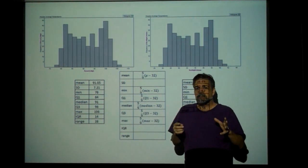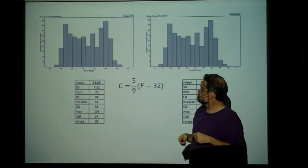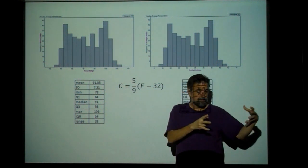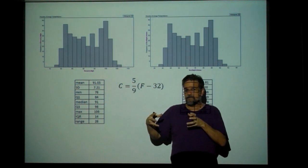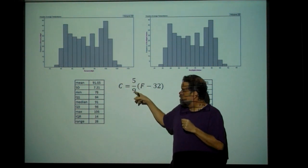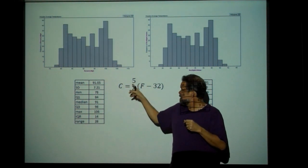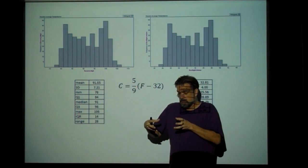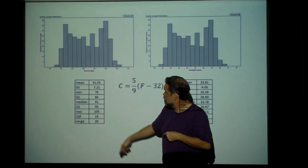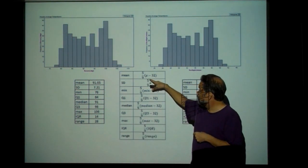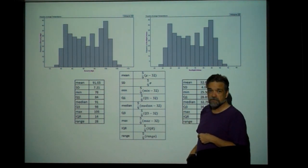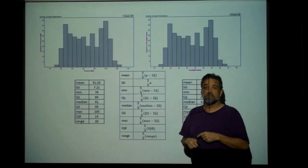Let's think about what's happening when we apply this function. We take our Fahrenheit data and subtract 32 — it just moves over. What happens to the spread when we subtract 32? Nothing — it's still just as spread out as before. Then we multiply by five-ninths. When you multiply by a number less than one, it compresses. Now the spread got smaller. So when measuring standard deviation, IQR, and range, we multiply by five-ninths but do not subtract the 32.